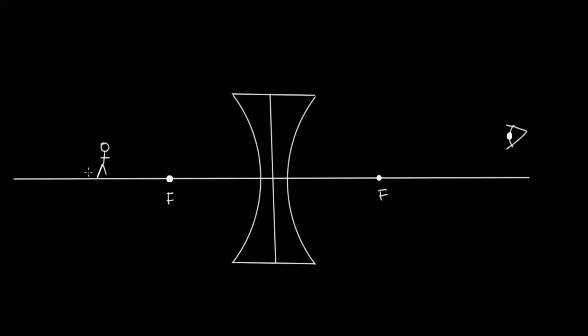So here's our little man. Here's our diverging lens. We've marked on the focal points on either side of the lens. And here's where the camera, or the eye, is positioned.